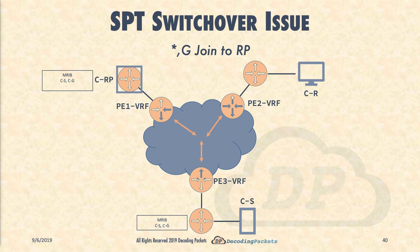Now to our scenario. We essentially had to choose a state to start from — either an active receiver with no sender, or an active sender with no receiver yet. We are choosing the latter, with an active sender present. This is the CS that in the customer site sits behind PE3. Let's assume that the PIM DR for the CS and the CRP in the site behind PE1 have already exchanged register and register-stop messages, so they are basically in a steady state.